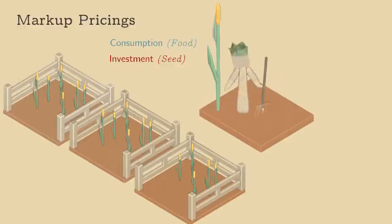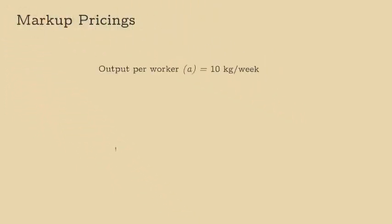Labour is the only input needed for production, so the only cost of production is wages. The average amount of corn one worker produces each week, A, is 10 kilograms.